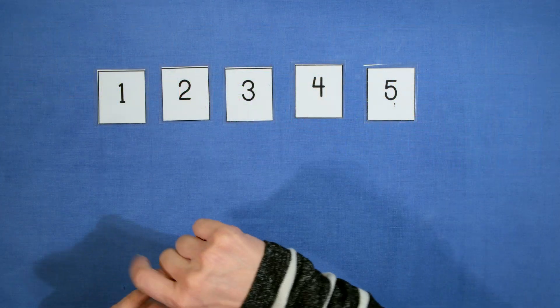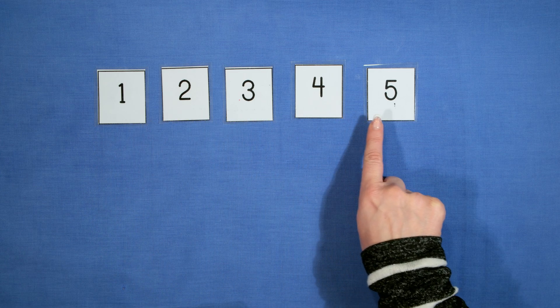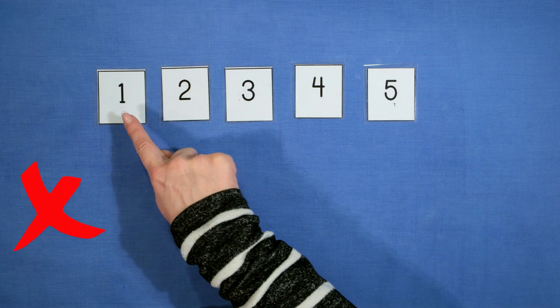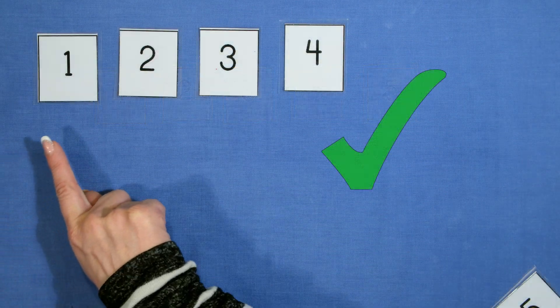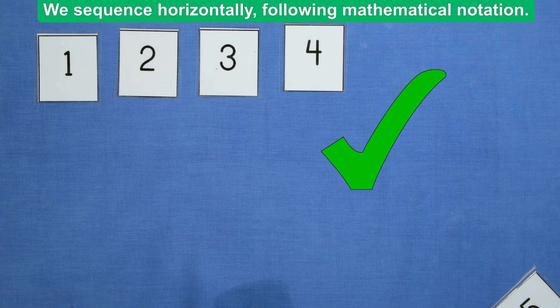It's very important to know that when you are sequencing the numbers, place them horizontally from left to right and not vertically down. So it must be horizontal, just like mathematical notation, left to right.